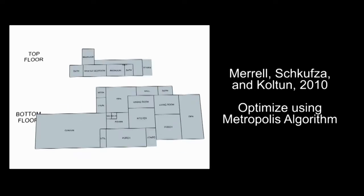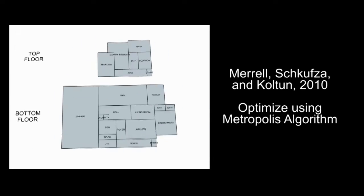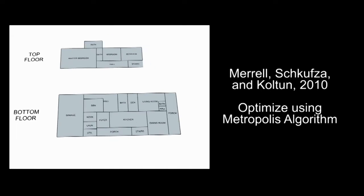You can also do optimization. Let's say you have some arbitrary cost function that you want to optimize. You could do something like the Metropolis algorithm, where you make lots of small changes to the model, and then accept or reject each change based on the cost function.